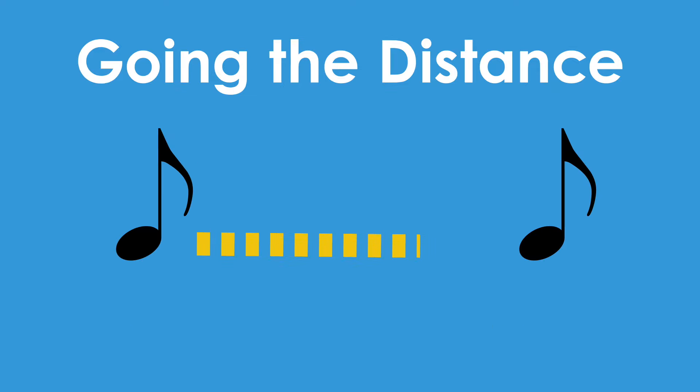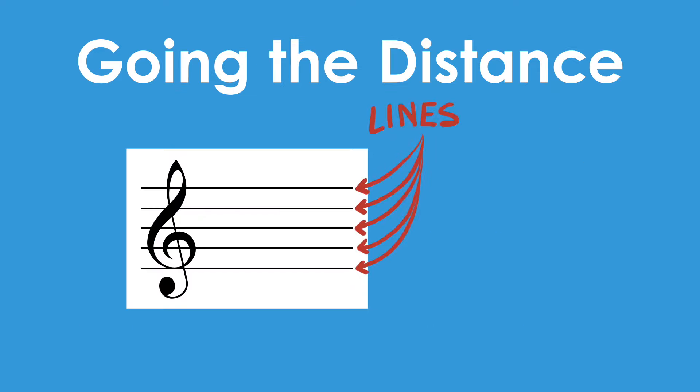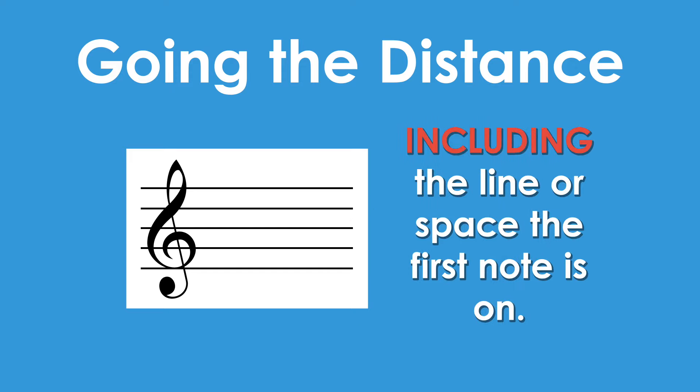To find the distance two notes are from each other, count the lines and spaces on the staff separating the two notes, including the line or space the first note is on.